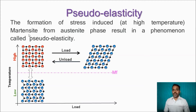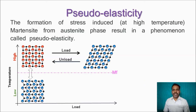Pseudoelasticity: the formation of stress-induced martensite from the austenite phase results in a phenomenon called pseudoelasticity. Here, the deformed martensite phase occurs at a higher temperature range — this deformation depends only on the stress value. At higher temperature, the austenite material under stress is converted into deformed martensite. If you remove the stress or load, it regains the initial austenite shape. This transformation occurs at higher temperature without a temperature change, and the deformation caused by stress or load is called pseudoelasticity.